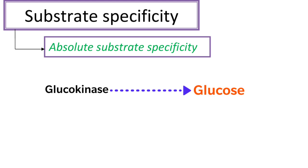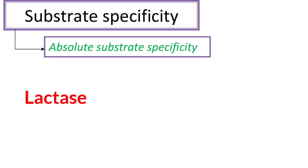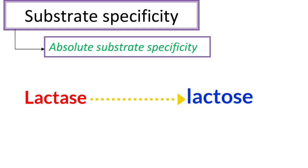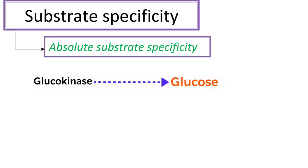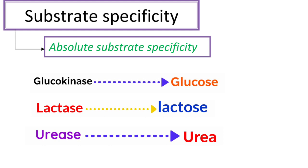In the same way, for lactase, lactose is the only substrate, and for urease, urea is the only substrate. Glucokinase acts only on glucose — it cannot act on lactose or any other substrate. Similarly, lactase acts only on lactose; it cannot act on urea, glucose, or any other substrate.